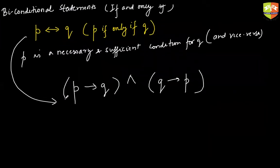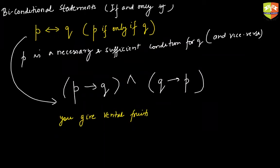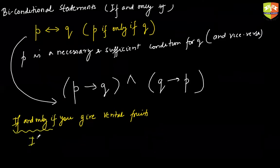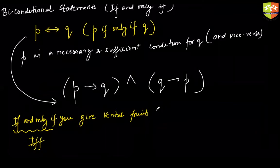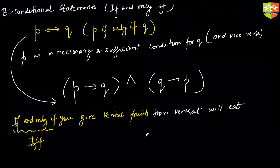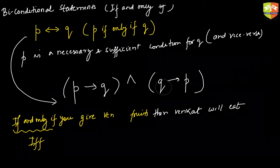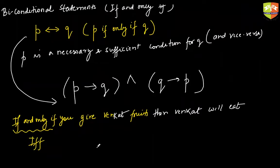Let me give you an example of this. If you give Venkat fruits, by the way this is represented by short form IFF, if and only if, then Venkat will eat. So that means Venkat won't take it from tree and eat, I should give it to him. Now what is the meaning of this?